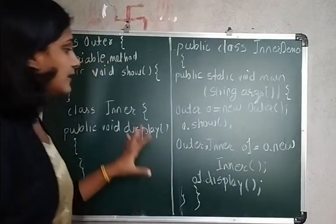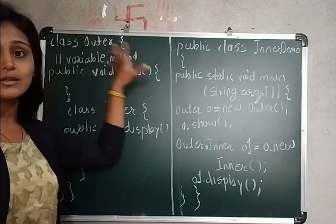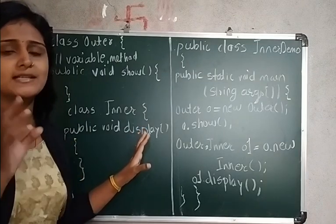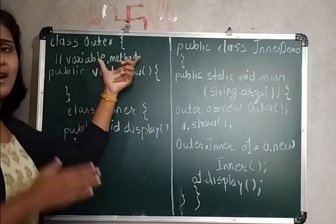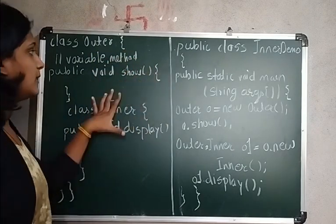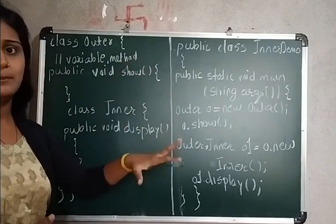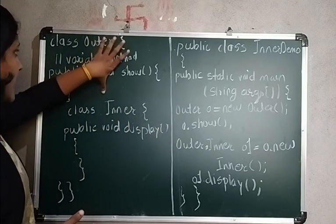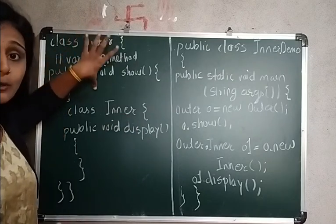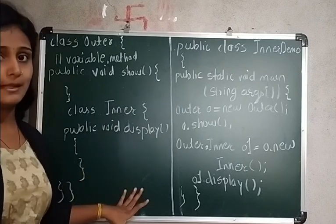Here I have taken an example. There is a class called 'Outer.' A class can have methods and data members — properties and behavior. Here I have taken a method called 'show' in the outer class. Whatever output is passed through it will be displayed. Inside the outer class, I have also taken an inner class, and inside that inner class I have a method.